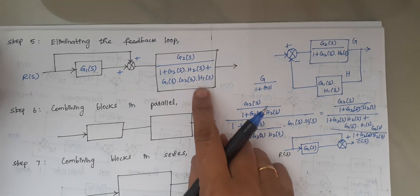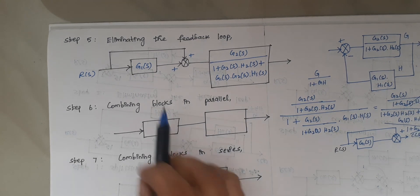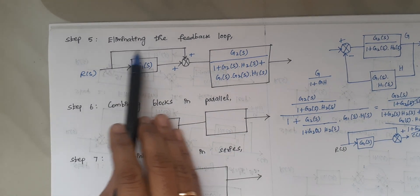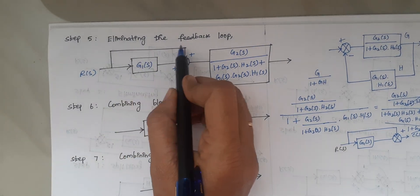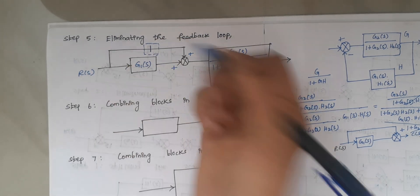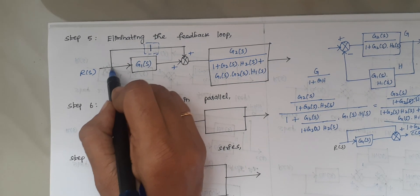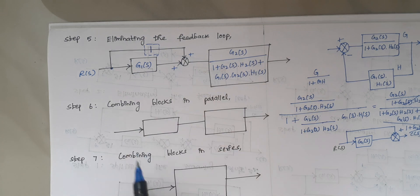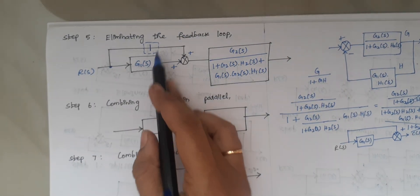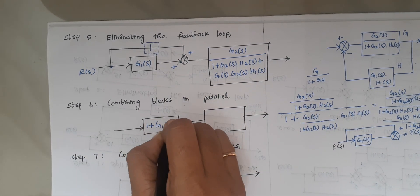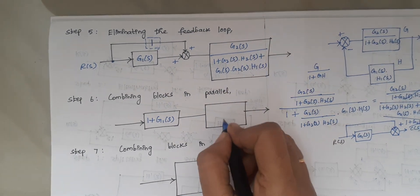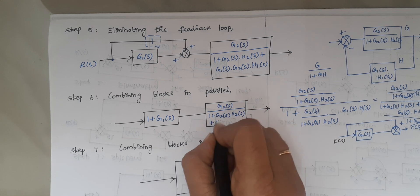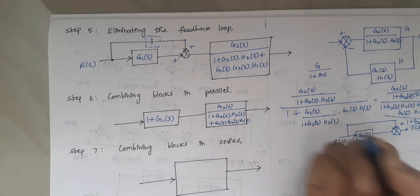The next step is combining blocks in parallel. G1(S) and the direct path (treated as a block with value 1) are in parallel — both start at the same point and end at the same summing point. When parallel blocks are combined, we add the elements, giving 1 plus G1(S).